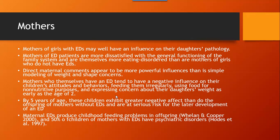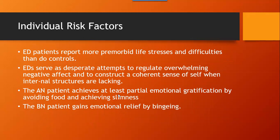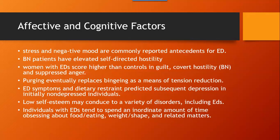Maternal eating disorders produce childhood feeding problems in offspring, and 50% of children of mothers with eating disorders have psychiatric disorders. Eating disorder patients report more pre-morbid life stresses and difficulties than controls. Eating disorders serve as a desperate attempt to regulate overwhelming negative affect and to construct a coherent sense of self when internal structures are lacking. An anorexic patient achieves at least partial emotional gratification by avoiding food and achieving slimness, while the bulimic patient gains emotional relief by binging. Stress and negative mood are commonly reported antecedents of eating disorders.